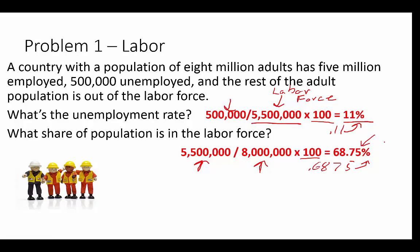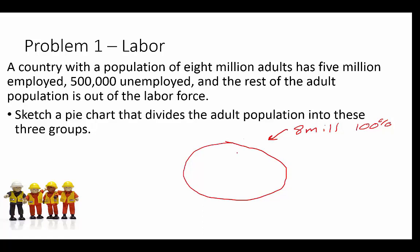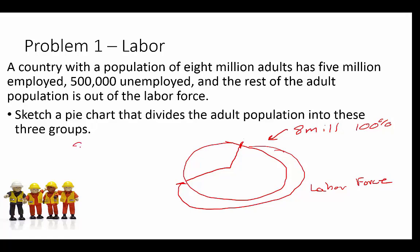So roughly 69% of this graph should be the labor force. We draw that chunk out. Now what percent is the unemployed out of the 8 million? We take our 500,000 and divide that by 8 million, which gives us roughly about 6%.